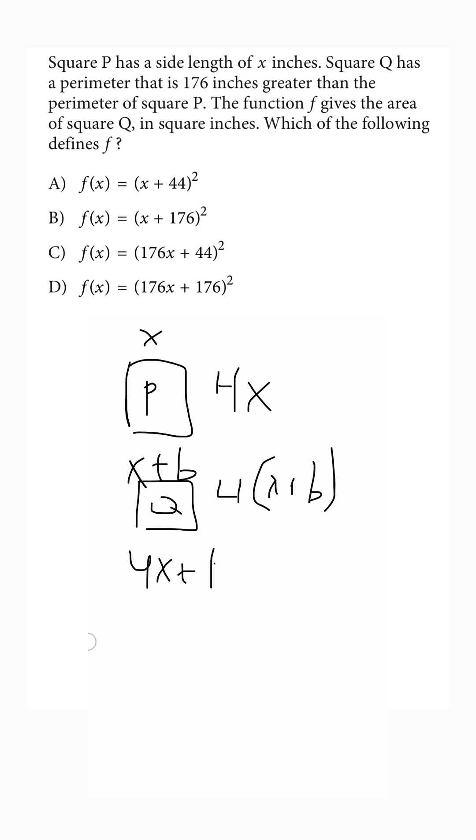is the same as 4x plus 176. Then let's just subtract 4x from both sides to get 176 equals 4b.